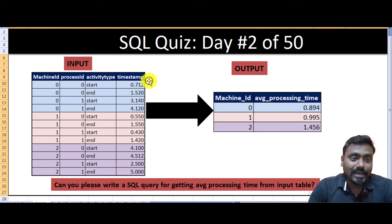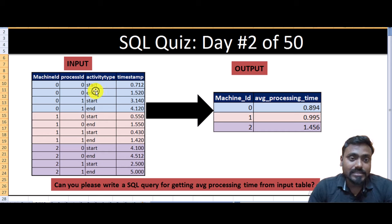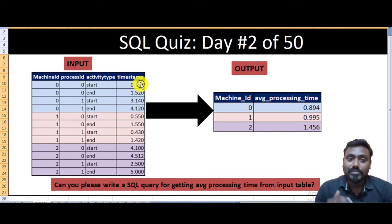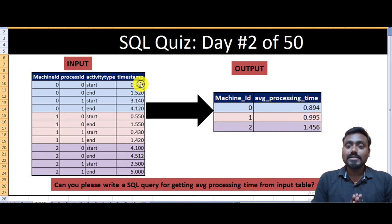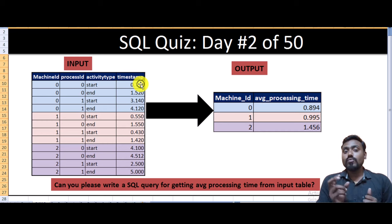Let's analyze this table. It has machine IDs — let's focus on machine ID zero. This machine was started twice. The start and end along with the process ID indicates how many times the machine was started. Process ID zero means it started the first time, process ID one means it started the second time. We can subtract end time from start time, then take the average grouped by machine ID. You can pause and think about the query logic before continuing.